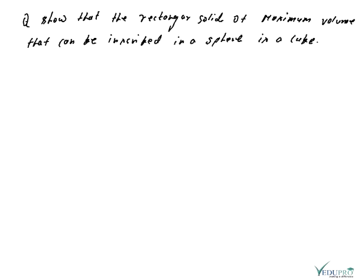The second figure is a sphere. So we need to know that length, breadth, and height are related to the function V, and the constraint function is phi(x, y, z). Now let's look at the solution.